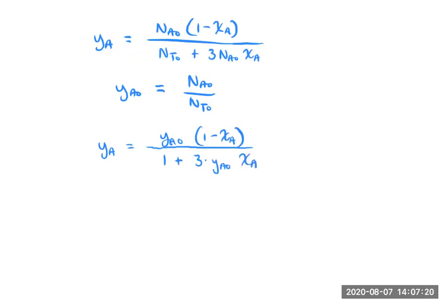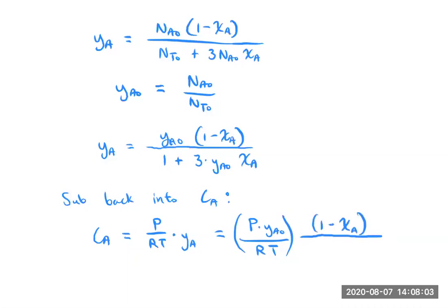So if I keep going and now put this back into, substitute back into CA expression, trying to do this one step at a time here, I get CA is equal to what I had before. The mole fraction of A initially is a constant, and so is the pressure and so is the temperature. So you can have that all out as a constant term. And then I just have everything in terms of conversion: 1 minus the conversion of A over 1 plus 3 times the mole fraction of A initially times the conversion of A.